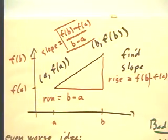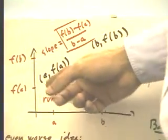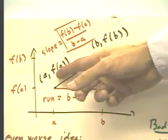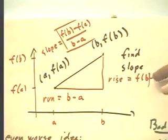Most people in the class did pretty well with this one. I simply said, the run goes from A to B. That's going to be B minus A. The rise goes from F of A to F of B. That's F of B minus F of A.